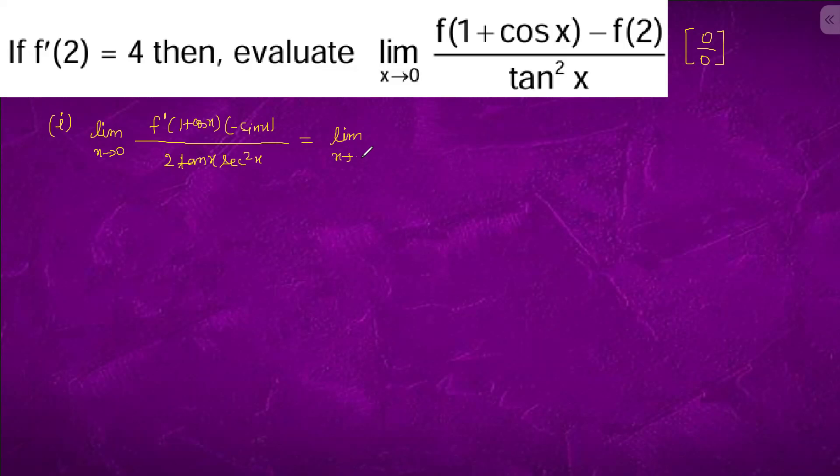x tending to 0, f dash(1 + cos x) times minus sin x over 2 sec square x. sin x cancels with sin x.